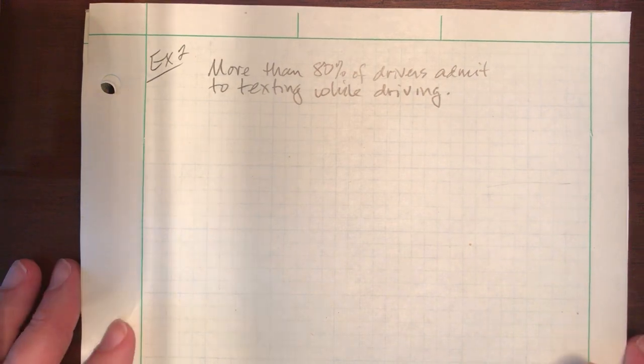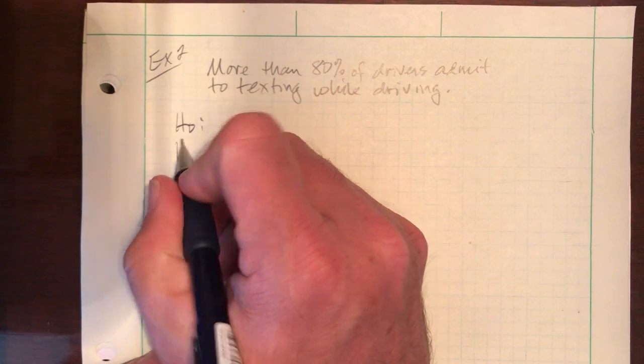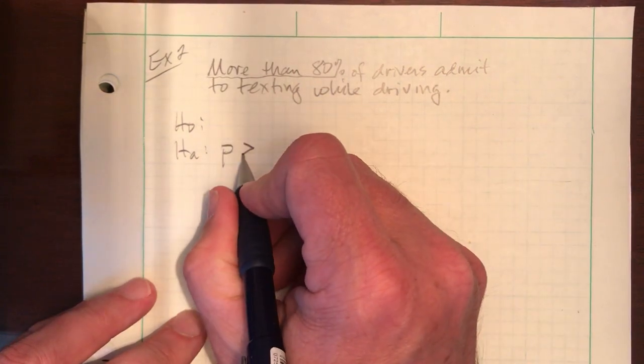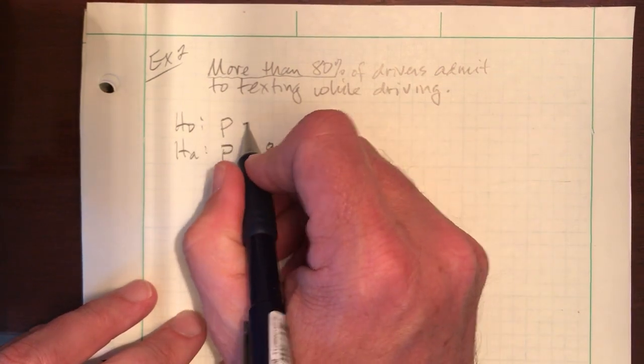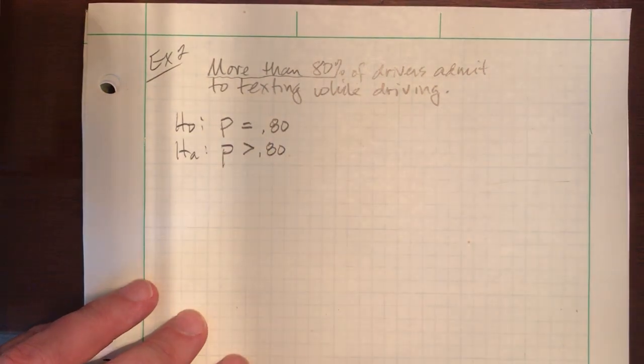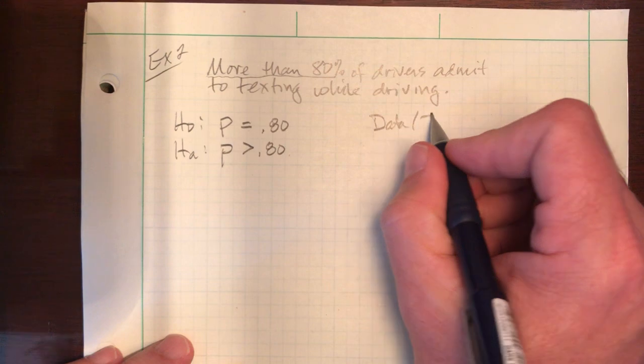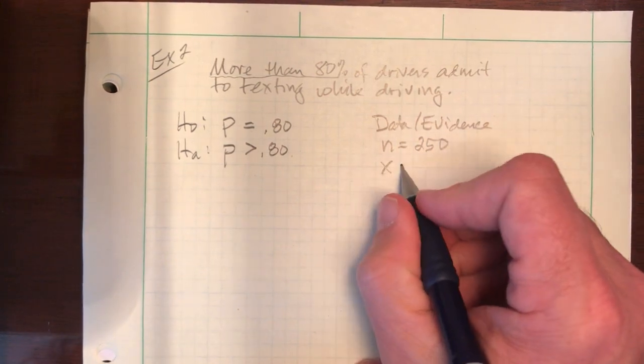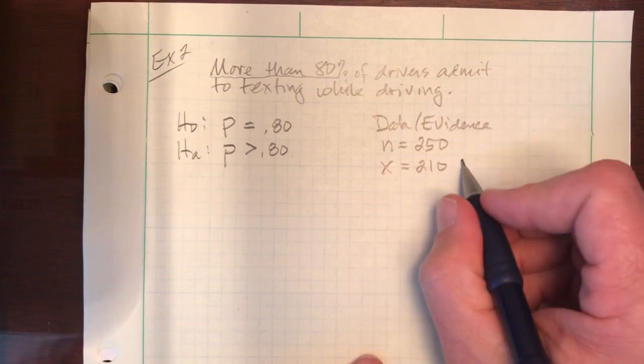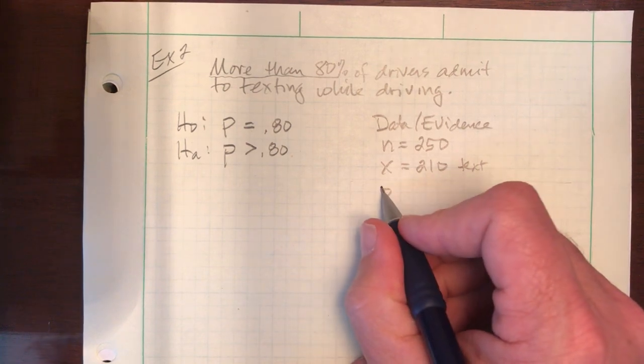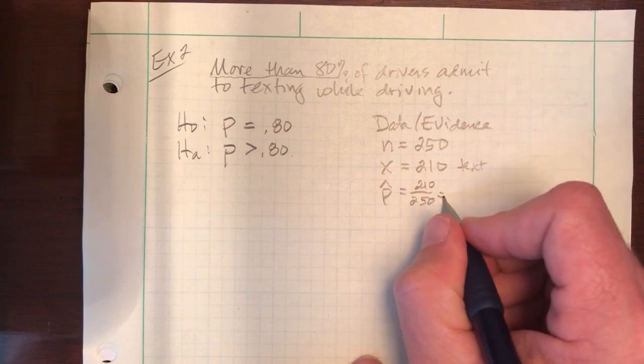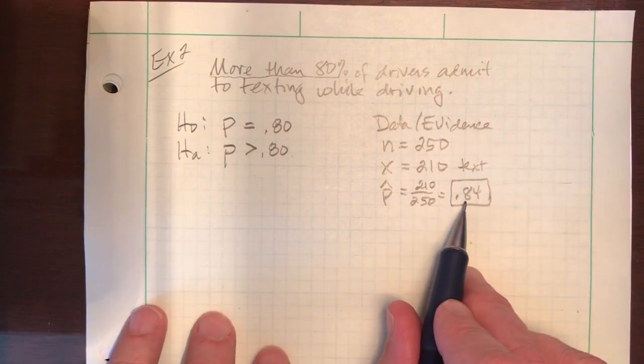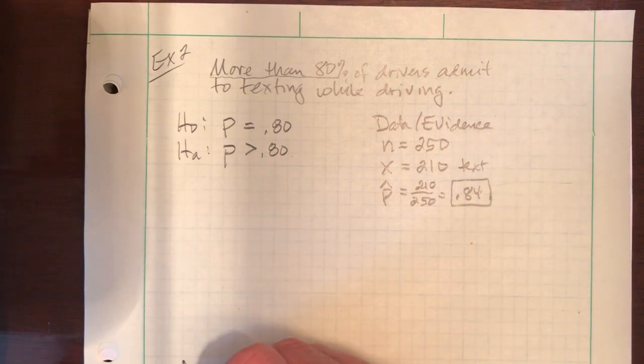More than 80% of drivers admit to texting while driving. Step 1, null and alternative. More than 80%, that's just a greater than. So that's P greater than 0.80. The complement would be less than or equal to, but we're just going to say equals every time. My data, which will always be given in your homework, or the evidence, there has to be a sample size. And let's say there was 250 drivers surveyed, and of them, 210 said they text while driving. I now need my point estimate, my P hat. So let's take 210 divide by 250, and we end up with 0.84. So the first important number we have, my evidence. Does that support my alternative of being greater than 80? Yes, it does. So we're on the move.